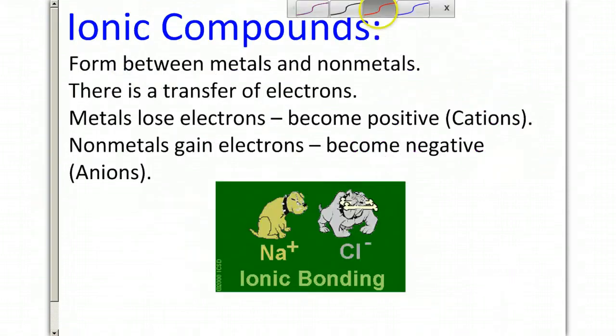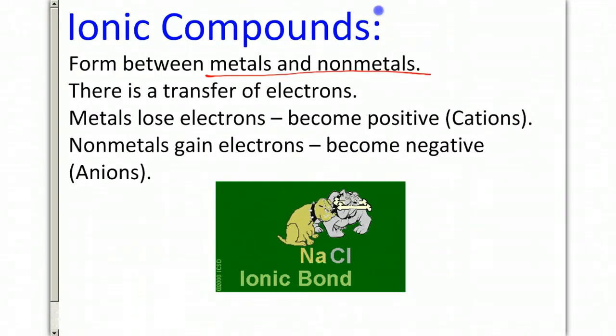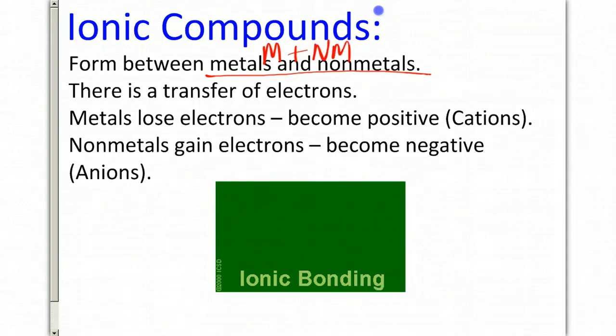Ionic compounds form between metals and non-metals. A metal plus a non-metal. This is very important because it gives you a quick sense of how to tell when a compound has transferred electrons.